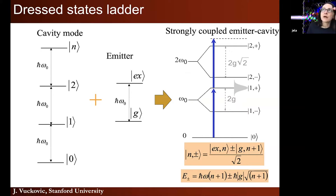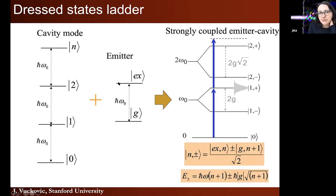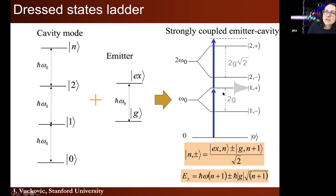We call these new eigenstates dressed states and the original eigenstates are called bare states. When plotted, all these new energy eigenstates form a ladder called the dressed states ladder. Without detuning — meaning the atom is on resonance with the cavity field — the new energy eigenstates form the dressed states ladder: starting from a two-level atom and one cavity mode (a harmonic ladder with levels separated by ℏω), strongly coupling them gives an anharmonic ladder. The first rung has splitting 2g, second has 2g√2, then 2g√3, and so on.